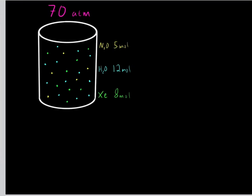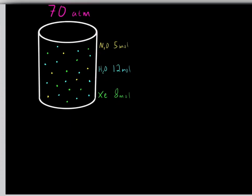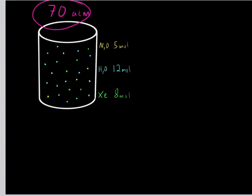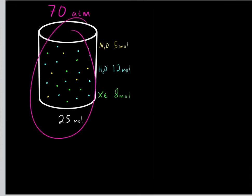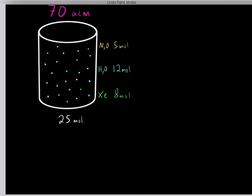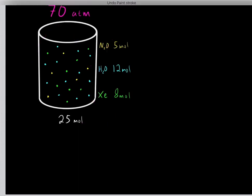Let's try another example. We have 5 moles of dinitrogen oxide gas, 12 moles of water gas, and 8 moles of xenon gas, with a total pressure of 70 atmospheres. What is the partial pressure of each of these gases? The first step is to find the total amount of moles — adding them up gives us a total of 25 moles.